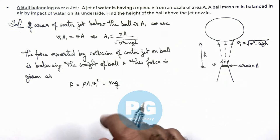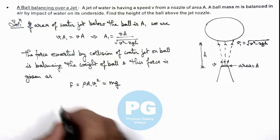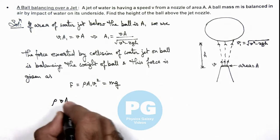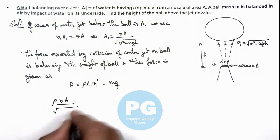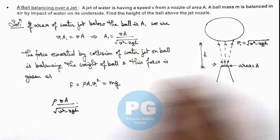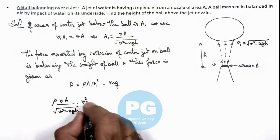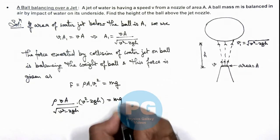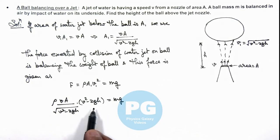So if we substitute the values here, we can write this as ρ, area we can write as v A divided by root of v squared minus 2gh, and v1 squared is v squared minus 2gh, is equal to mg. So in this situation, if we simplify the relation.